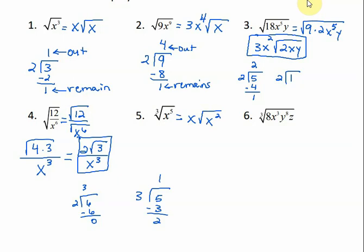For number 6, we're taking the cube root of each part. The cube root of 8 is 2 — it's a perfect cube. The cube root of x cubed: 3 divided by 3 is 1, so 1 whole x comes on the outside. The cube root of y to the 8th: 8 divided by 3 — 3 will go into 8 two times with 2 left over. So 2 y's on the outside and y squared under the radical. And there's only one z, so we can't divide 1 by 3, so it stays where it is. That's my answer.